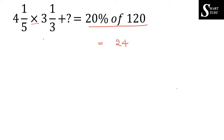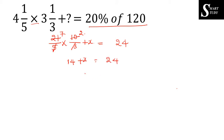Cancelling: 3 goes into 21 seven times, and 5 goes into 10 two times, giving 7 into 2 equals 14. Transferring 14 to the other side: x equals 24 minus 14 equals 10. So the final answer is x equals 10.